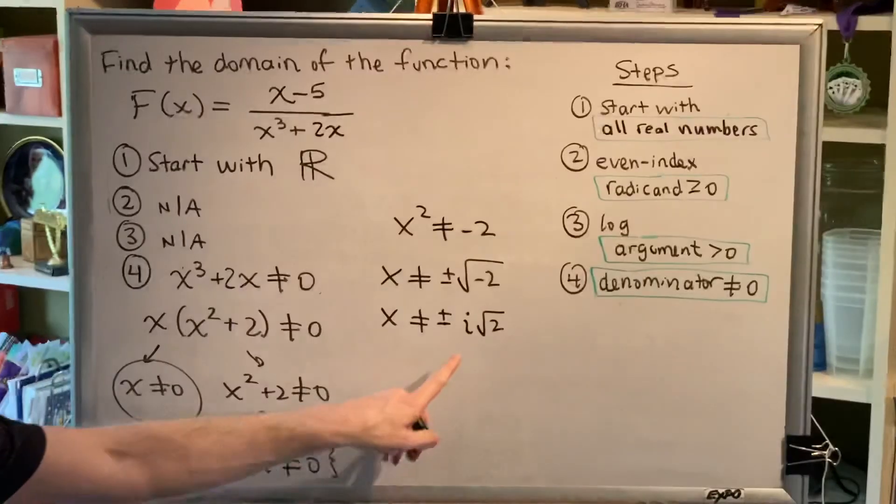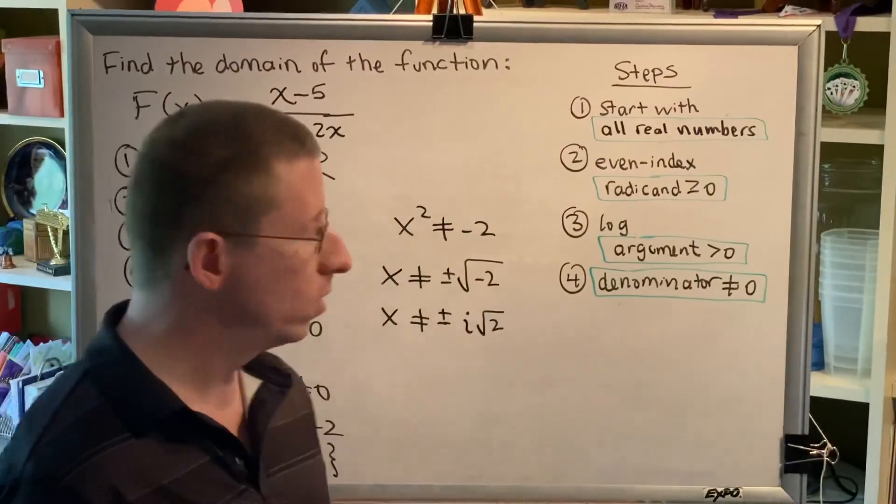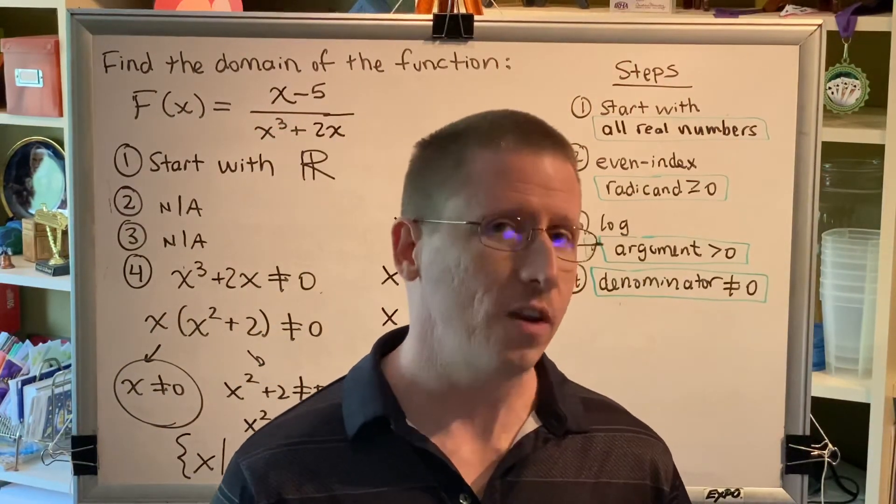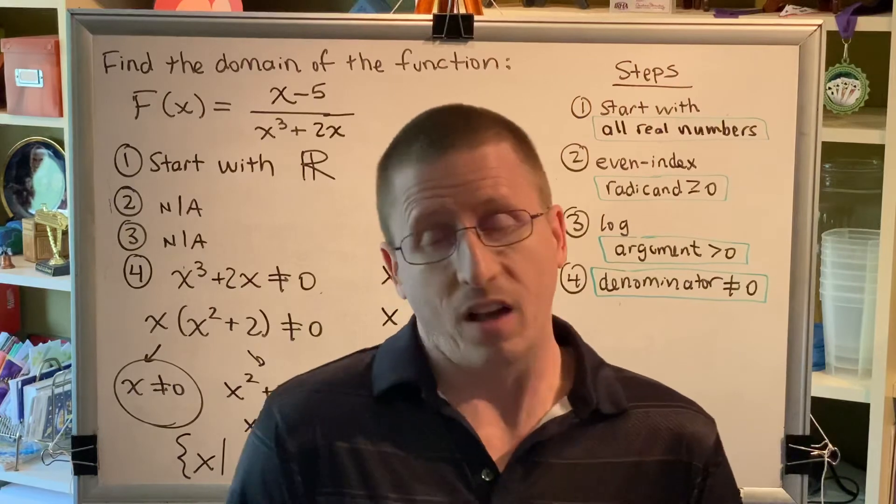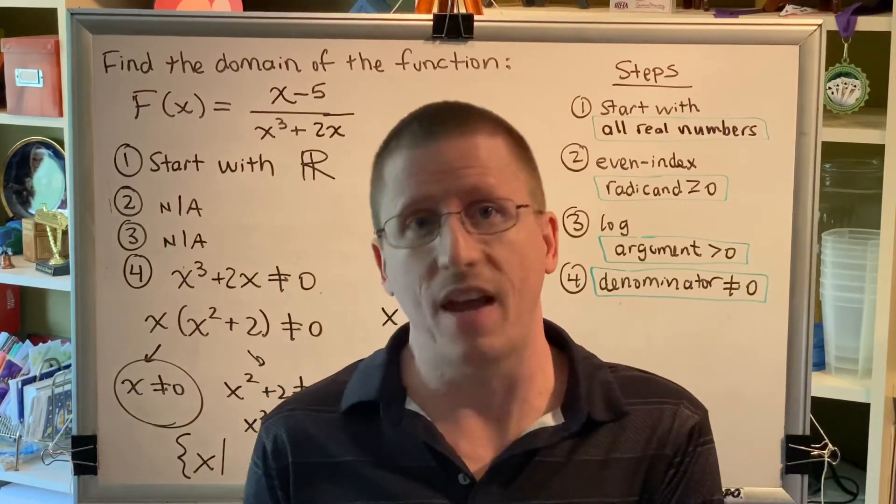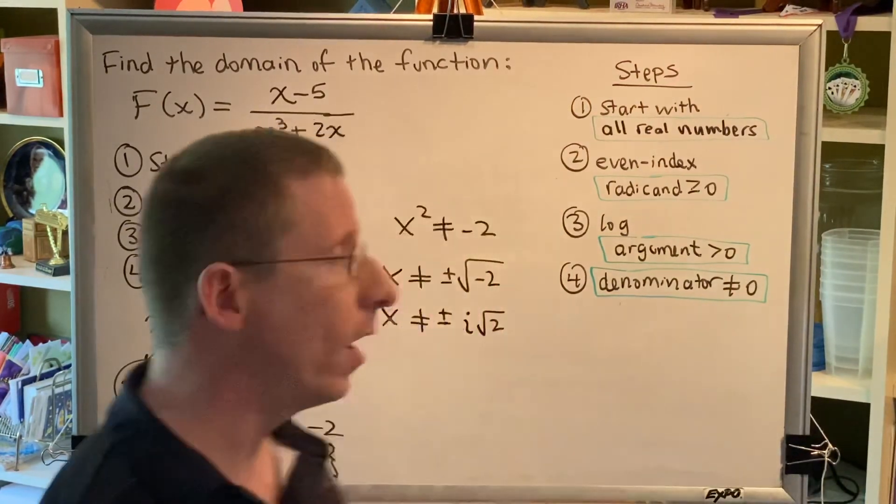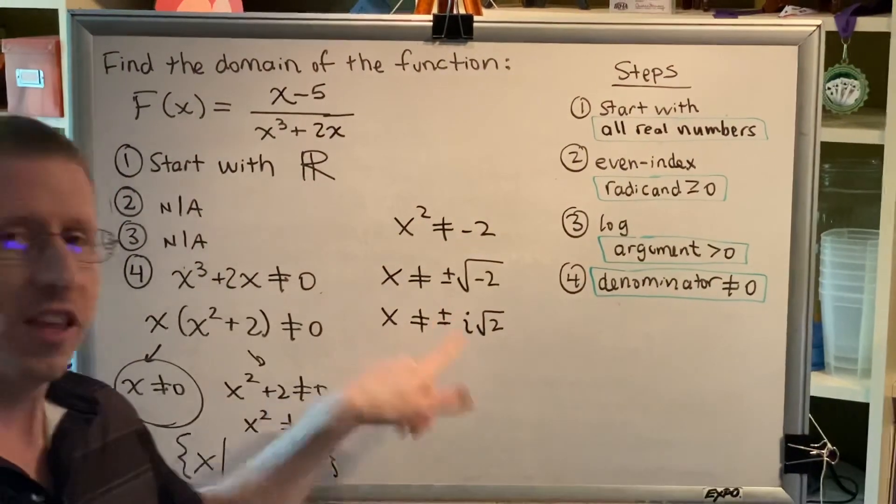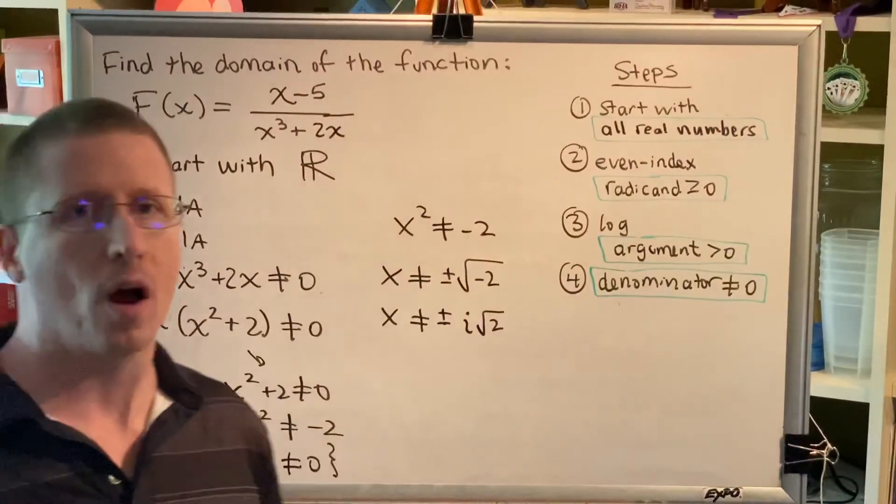Now, what kind of number is i times the square root of 2? That would be an imaginary number. And again, I remind you that the definition of domain is the collection of all the real numbers x that give us real numbers y.